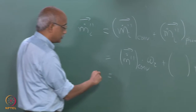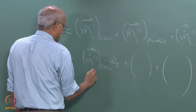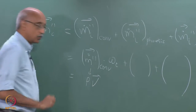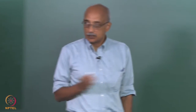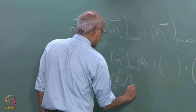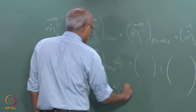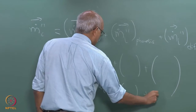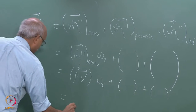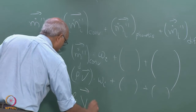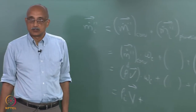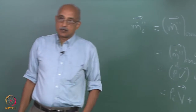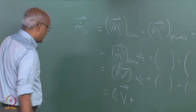The convective flux of the host fluid can be written as rho times v, where rho is the density of the host fluid and v is the prevailing convective velocity. So m_i dot double prime convection equals rho times v times omega_i, which is the convective flux of the entire fluid multiplied by the mass fraction of the i-th component.